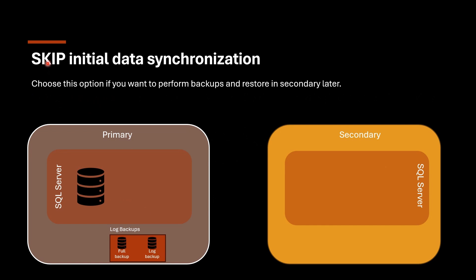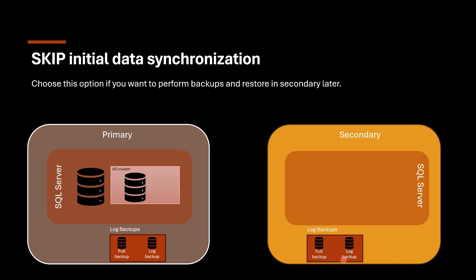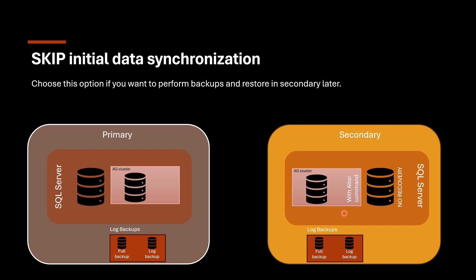We have one last option left: Skip Initial Data Synchronization. This option is nearly the same as Join Only with a little difference. You have the database in primary but have not yet restored the database in secondary. You can add the database to the AG cluster with Skip Initial Data Synchronization - the database is added only in primary. Then you move the database backups to secondary, copy and paste, and restore with No Recovery. Finally, you manually run an ALTER command in secondary to add the database to the AG cluster.